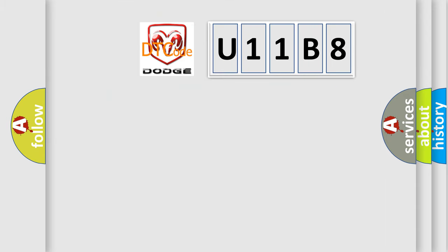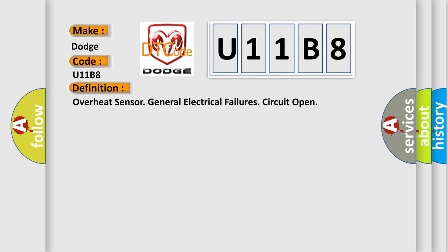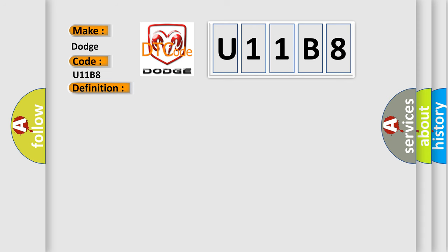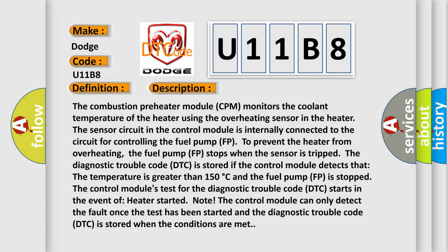What does the diagnostic trouble code U11B8 interpret specifically for Dodge car manufacturers? The basic definition is: Overheat sensor general electrical failures, circuit open. The combustion preheater module (CPM) monitors the coolant temperature of the heater using the overheating sensor. The sensor circuit in the control module is internally connected to the circuit for controlling the fuel pump (FP) to prevent the heater from overheating.